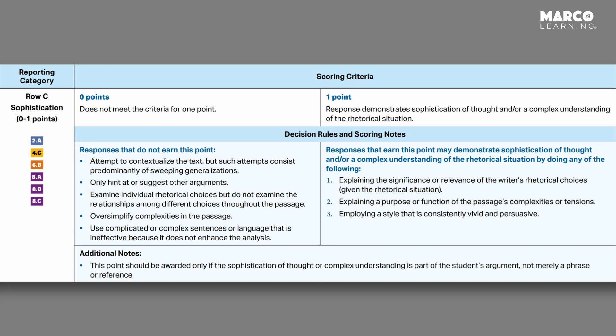Now I want to take you to the College Board's official rubric. This is what question two, the rhetorical analysis essay question, looks like on the sophistication row. You can see all of these different buttons over here — 8A and 2A — there are all these different rules and regulations. I'll walk you through each part of this. Sophistication is one of those six points that you can be awarded. You can either get zero points — does not meet the criteria — or one point. Let's start with how the point can be earned.